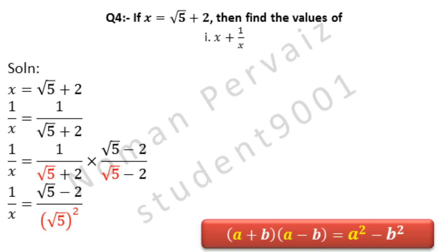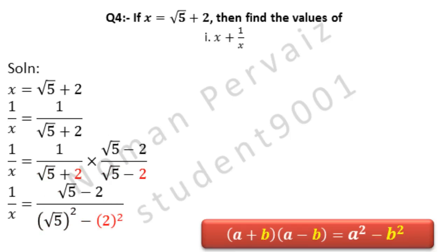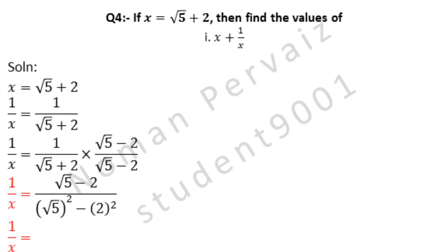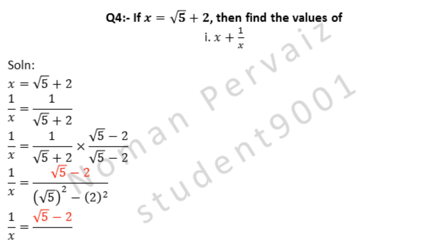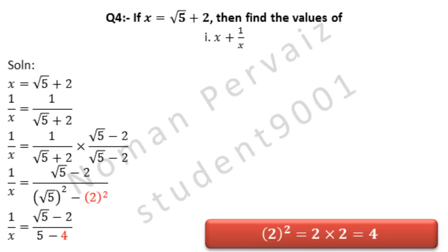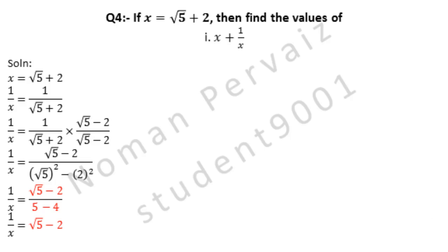By applying the formula, under root 5 whole square is written, minus b square, and our b is 2 so we write 2 square. 1 over x equals under root 5 minus 2, divided by the result. Square and square root are cancelled leaving 5, and 2 squared is 4, so 5 minus 4 is 1. We ignore 1 in division, so 1 over x equals under root 5 minus 2.